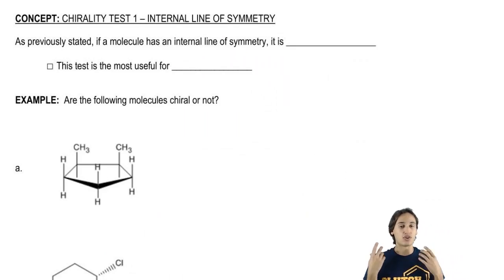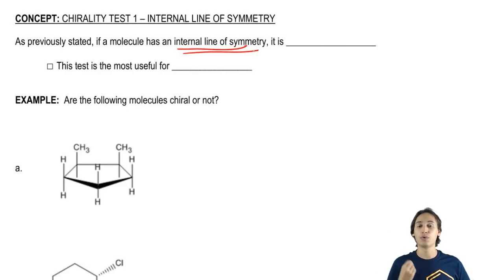The test is called test one and it's the internal line of symmetry test. What we want to do is look at these compounds and see if they have an internal line of symmetry. If they do have an internal line of symmetry, then we would say that would be an achiral molecule.